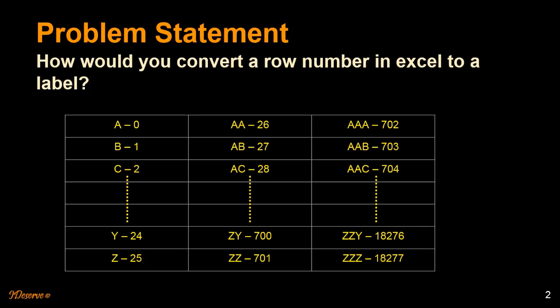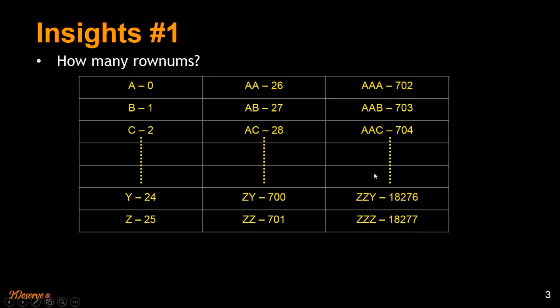Let's go ahead and look at a few insights. Let's see how many row numbers are there for single letter, two letter and three letter labels and try to come up with some kind of formula. So there are 26 row numbers for single letter labels.